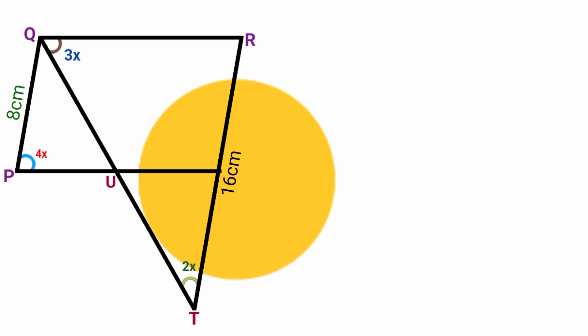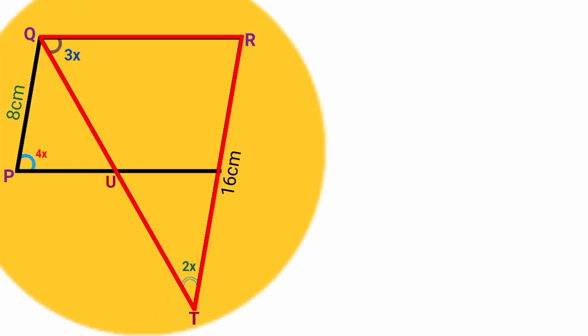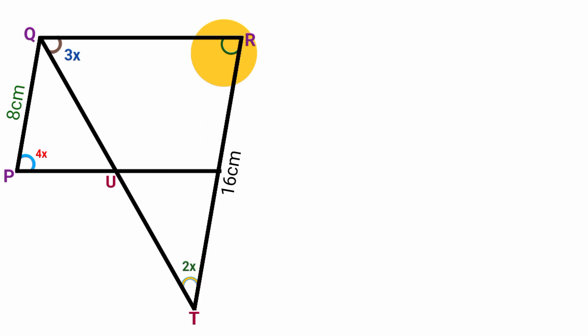Now we have the length of line RT. To find the length of line QR from this triangle, we still need the size of this angle here and also this angle here. So what are the sizes of the angles? This is 3x and this is 2x. What is the size of this particular angle here?